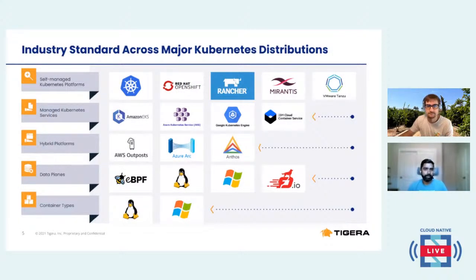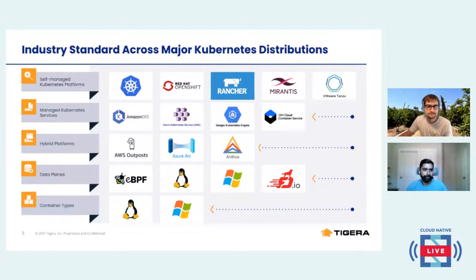Calico works across all major Kubernetes distributions, whether it's OpenShift, Rancher, Mirantis, on-prem, or managed Kubernetes services like Azure, Amazon's EKS, or GKE. It also works on hybrid platforms — some users have used AWS Outposts or even Anthos for their hybrid deployments. It works in a pluggable data plane model, supporting eBPF, Linux, and Windows, and two types of containers: Linux and Windows.